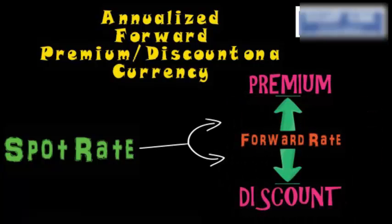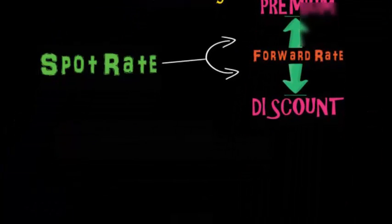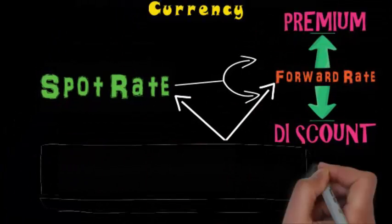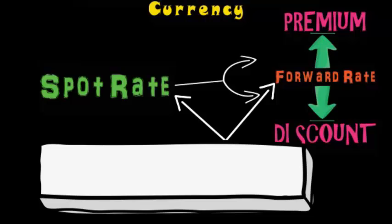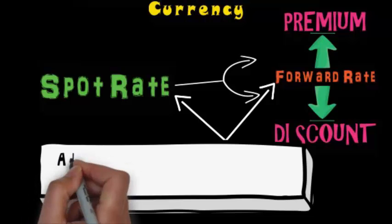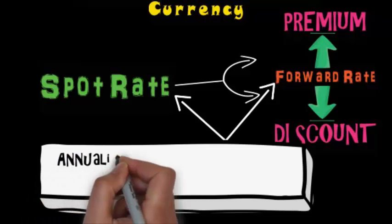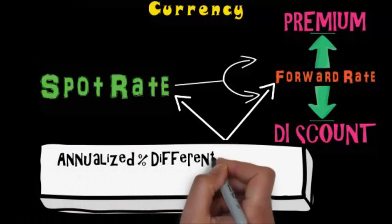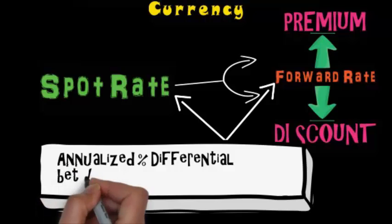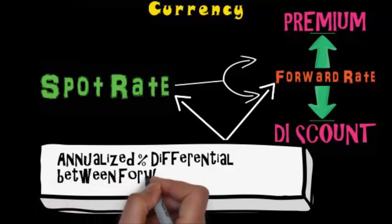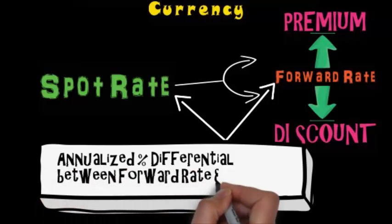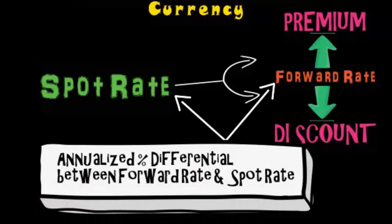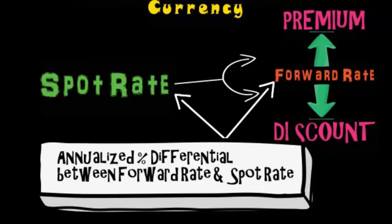This is the differential percentile between the spot rate and the forward rate, calculated annually, and is known as the annualized forward premium or discount on a currency.